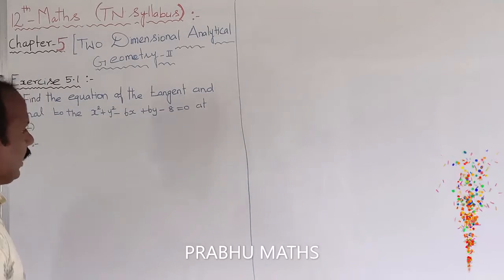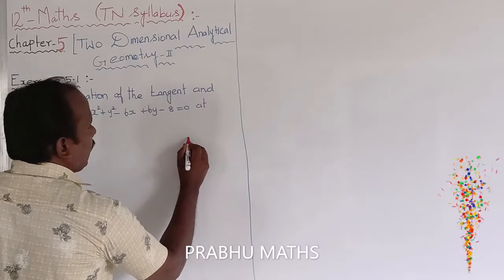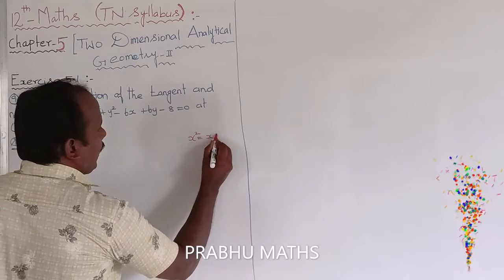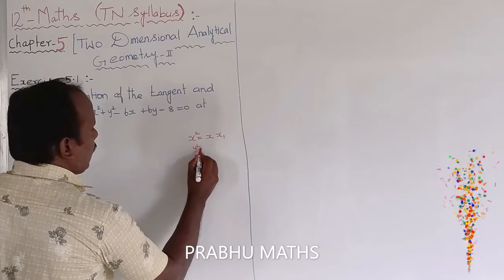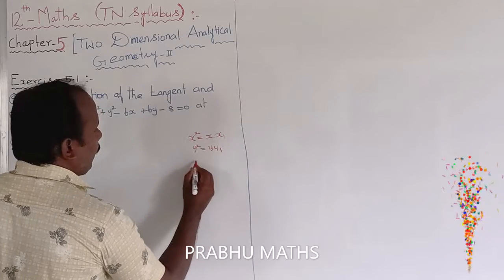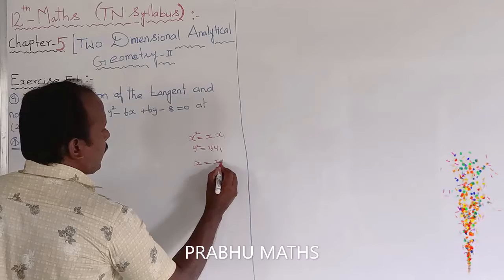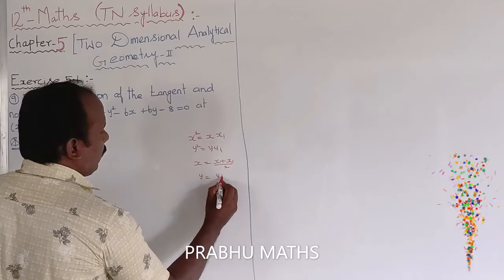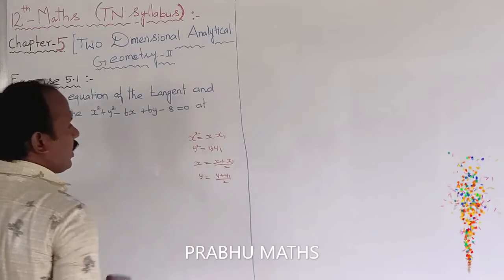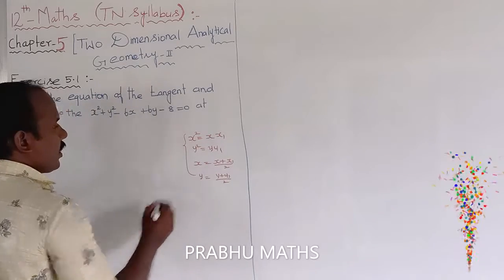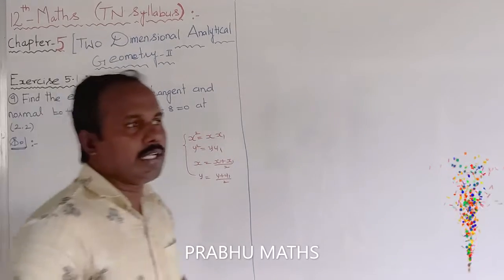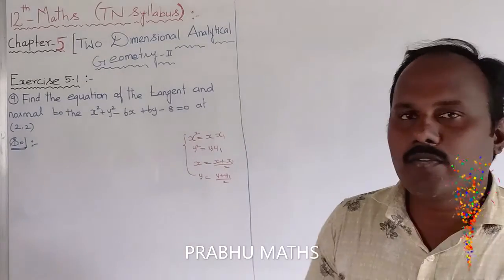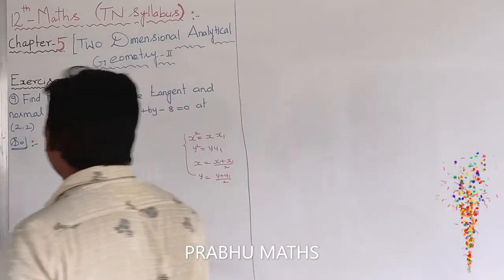We know the formula: x² is replaced by xx₁, y² is replaced by yy₁, x is replaced by (x + x₁)/2, and y is replaced by (y + y₁)/2. That gives the tangent equation — x² replaced, y² replaced, x replaced, then y replaced.